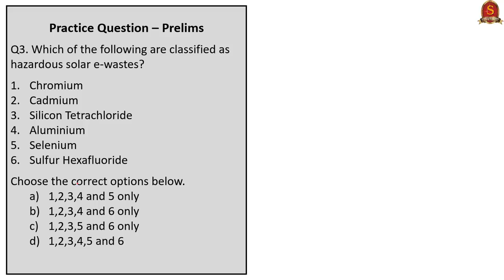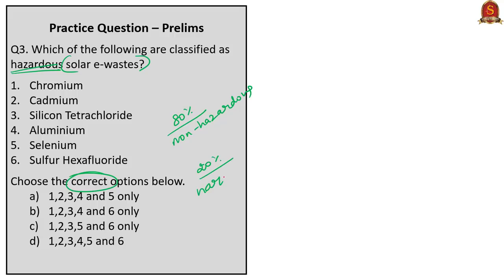The third question is about hazardous solar e-waste. Today we discussed that solar cell modules have 80% non-hazardous materials such as glass and aluminium, and the remaining 20% are potentially hazardous such as polymers, metals, metallic compounds and alloys—particularly chromium, cadmium, selenium, silicon tetrachloride, and sulfur hexafluoride. Aluminium is not a hazardous solar e-waste. Therefore, the correct option is C: 1, 2, 3, 5 and 6 only.